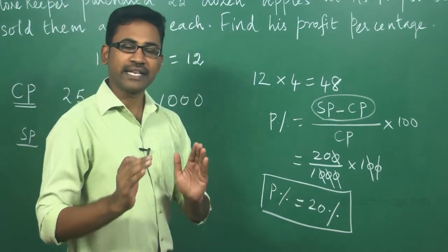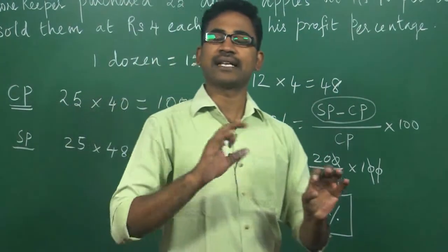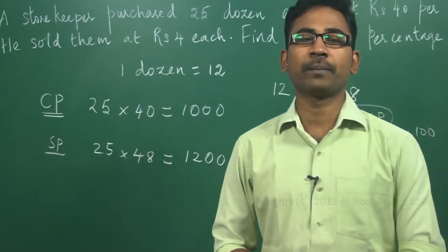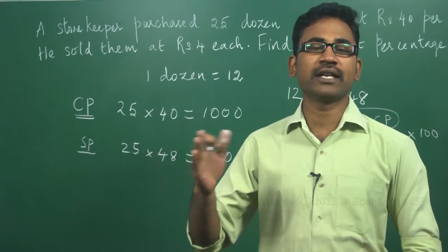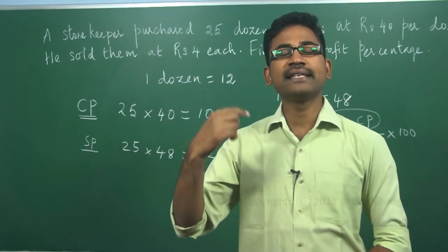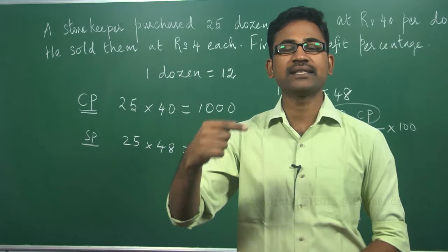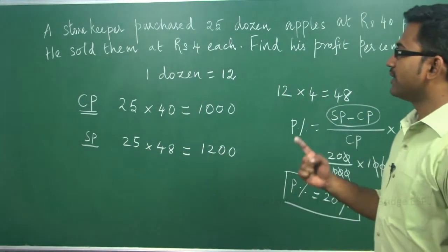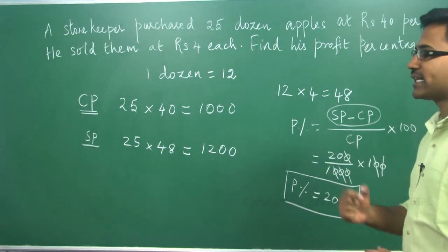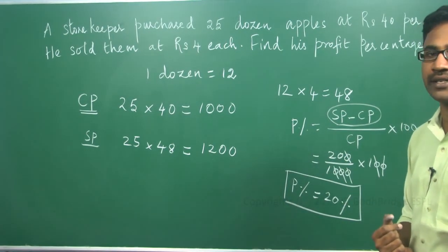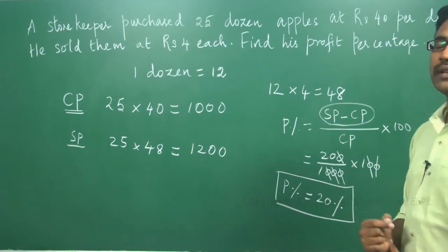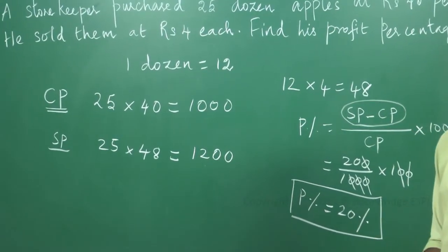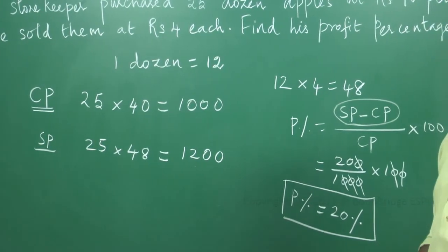In this question, they had given some quantity and its associated value. 25 dozen of apples he is purchasing for Rs. 40 per dozen. So, 25 into 40 will give the cost price. Then, he is selling at Rs. 4 each. That means, 12 into 4, so 1 dozen will be sold for Rs. 48. That's why we are multiplying the 25 dozens into 48. That will be 1200. Cost price is 1000, selling price is 1200.